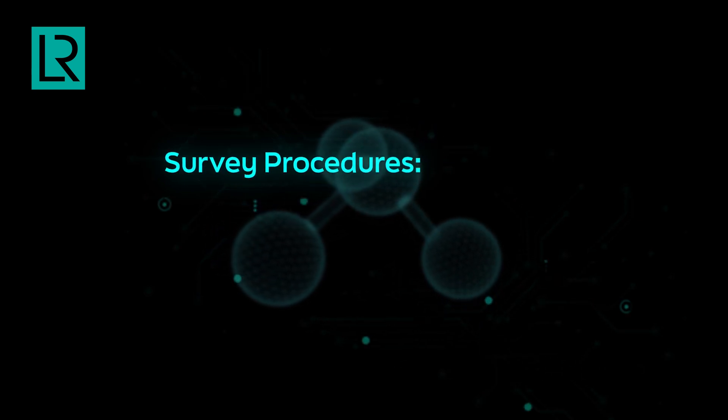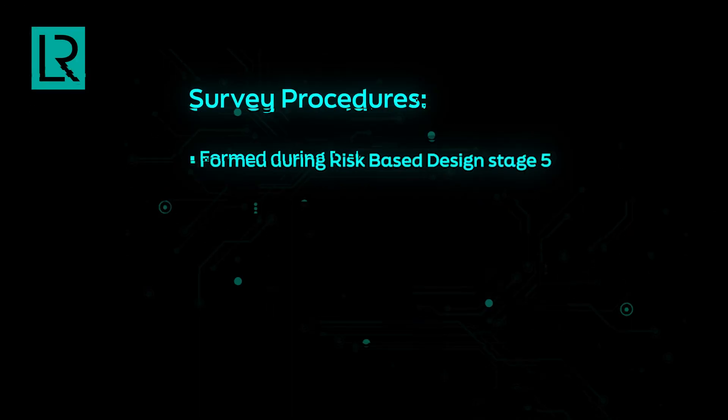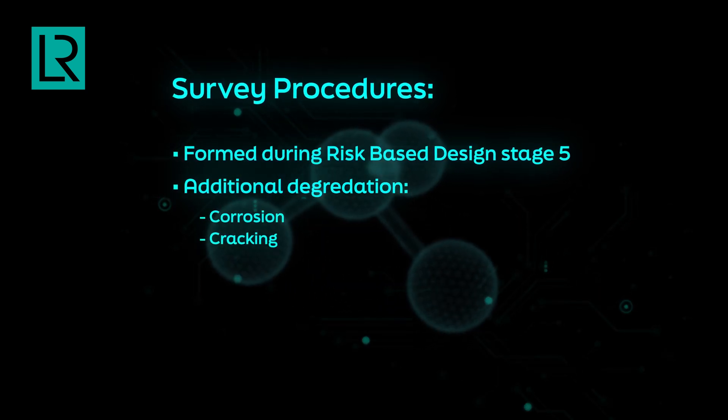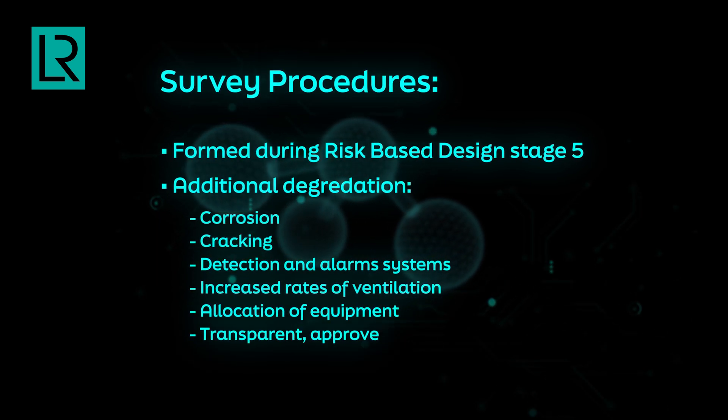The most important thing to note when surveying and inspecting machinery, equipment and components containing ammonia as fuel is your own individual safety and that of the crew on board. The development of survey procedures for ammonia-fuelled ships is formed during the RBC 5 stage. During these surveys, the additional degradation and deterioration we have within the system will include corrosion, potentially stress corrosion cracking, the detection and alarm systems, increased rates of ventilation, the allocation of equipment and ensuring that change management has been completed in a transparent and approved manner. It's important to note that we can draw on existing experience within LR technical teams from surveying ammonia carriers.